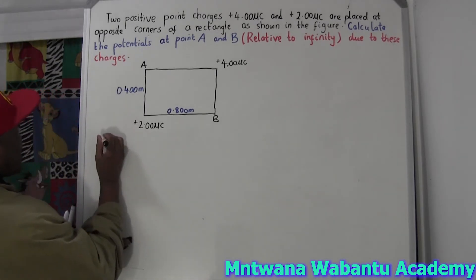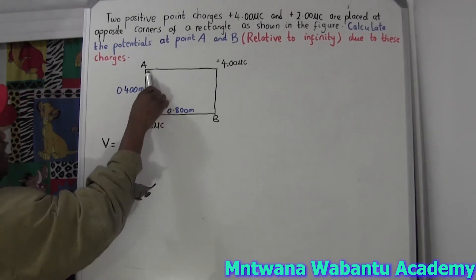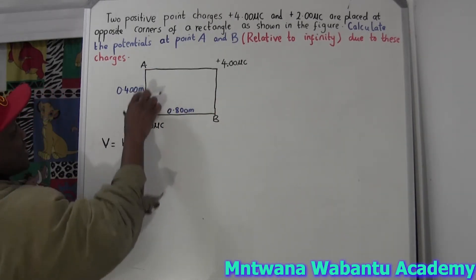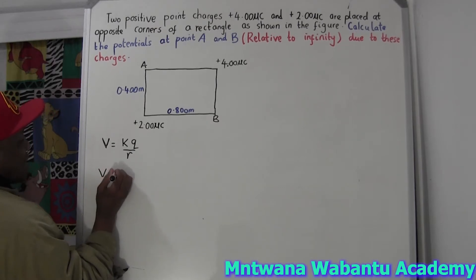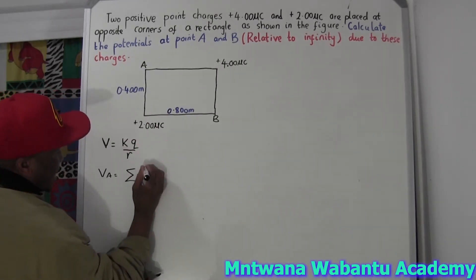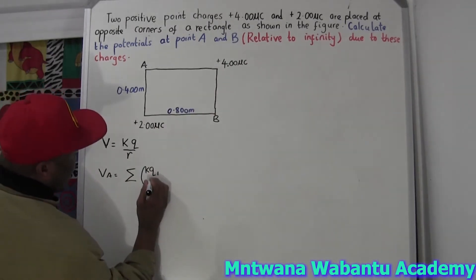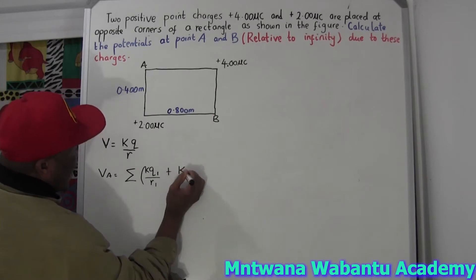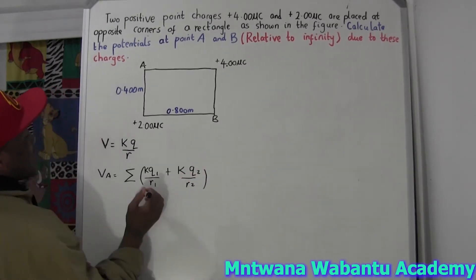To calculate the potential, we say V equals K times Q over R. If you look carefully at point A, there is a first charge Q1 and then another charge Q2. So the potential at A equals K times Q1 over R1 plus K times Q2 over R2.